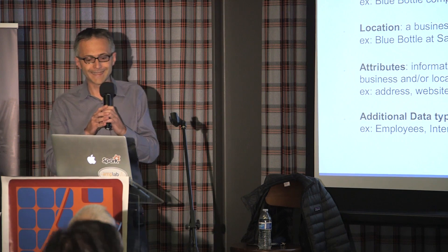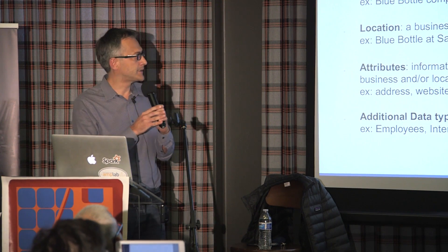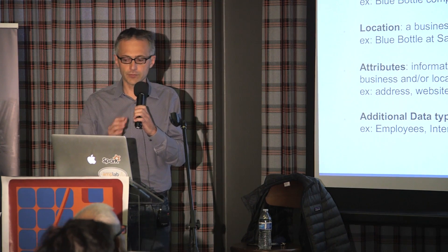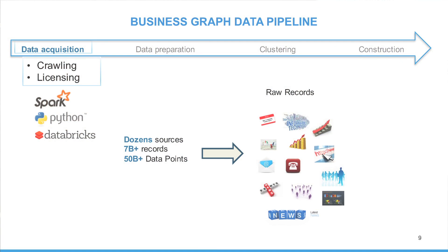In addition to business and location, we have a number of other types of data — such as employees, intent, news, technology, products, and so forth — that we want to have in the graph. At a very high level, our data pipeline is broken down into four steps to construct a graph: data acquisition, preparation, clustering, and construction. I will quickly go over the first three and then zoom in on some steps of the last one.